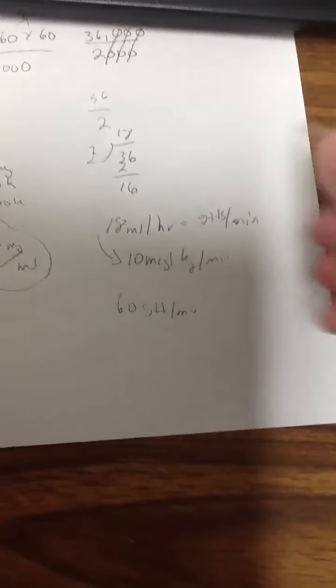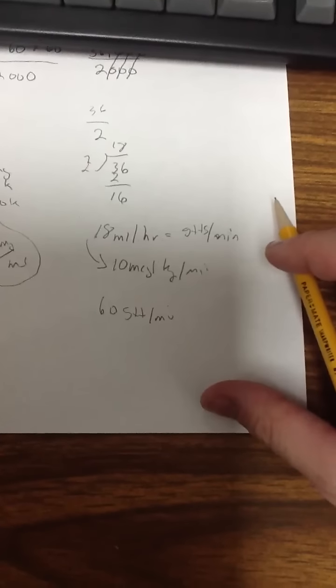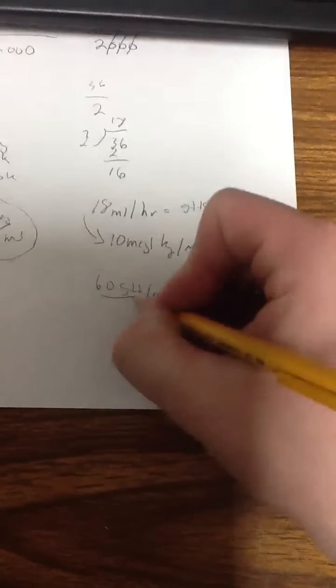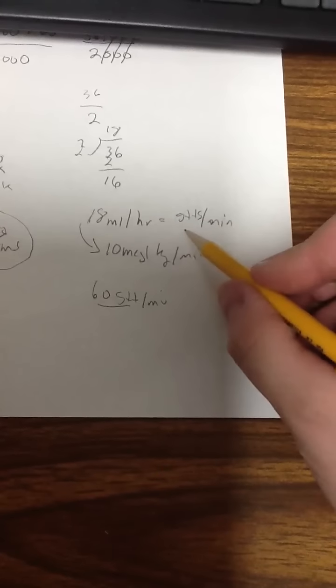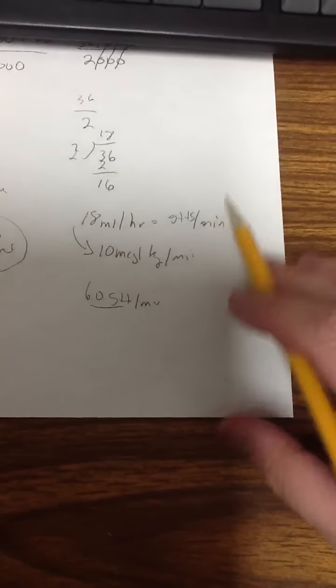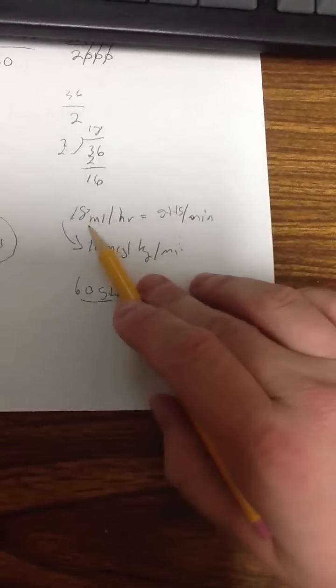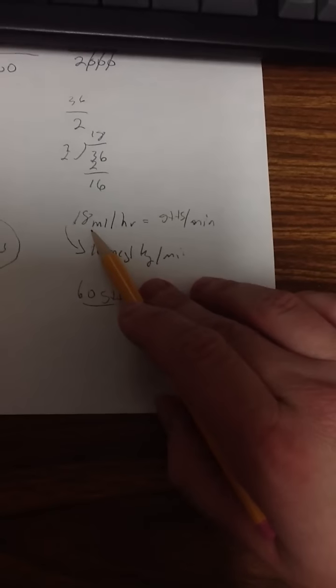So if I'm in an unfortunate situation where I don't have an IV pump, I just hang 60 drop tubing, and milliliters per hour equals drops per minute, so I would run my infusion at 18 drops per minute. That would give me 18 milliliters per hour.